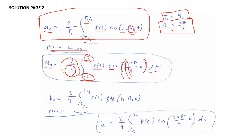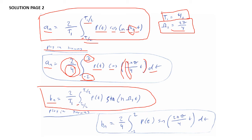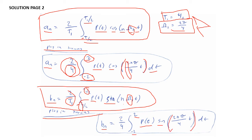Next, we set up bₙ. From equation 7.4, the general form is bₙ = (2/T₁)∫[−T₁/2 to T₁/2] p(t)·sin(nω₁t)dt. Plugging in T₁ = 4 and ω₁ = 2π/4, bₙ becomes (2/4)∫[−2 to 2] p(t)·sin(2nπ/4 · t)dt. This is our expression for bₙ.